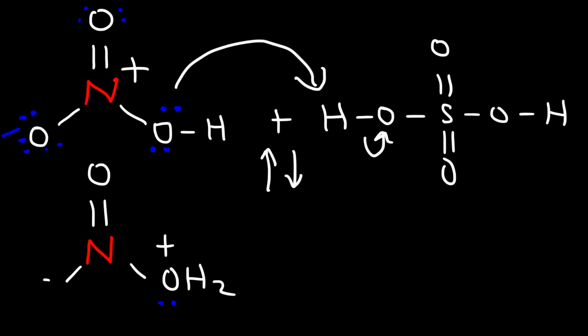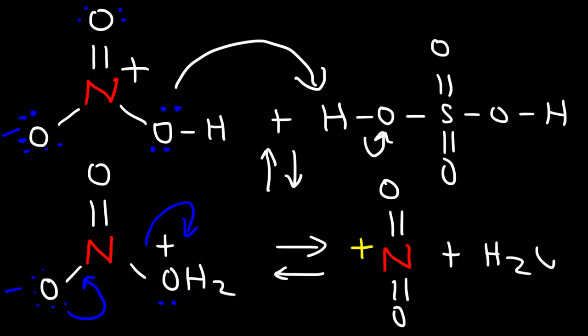We're going to use this oxygen atom to expel water. This will generate the nitronium ion, which looks like this. We have a positive charge on the nitrogen atom. That is a positive formal charge. We also have water as a side product. This is the electrophile that we're going to react the benzene ring with.